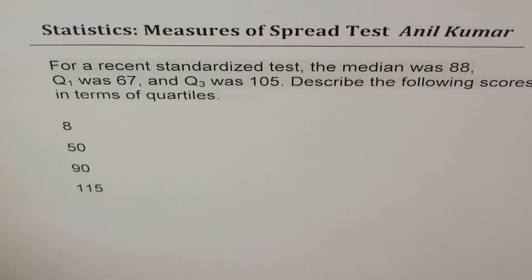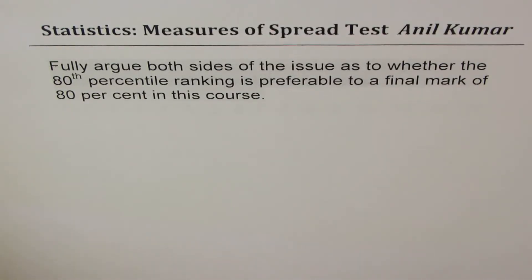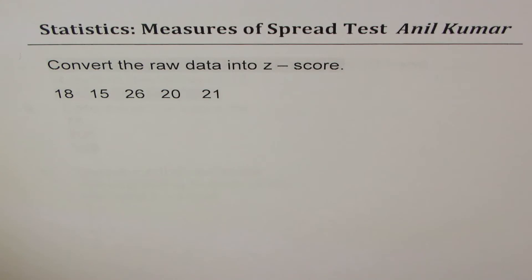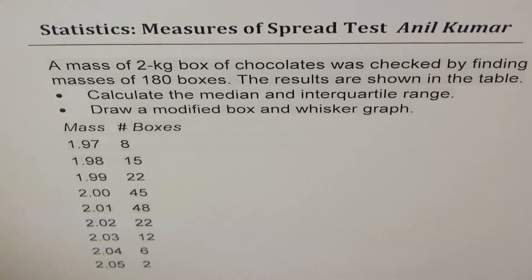Then we'll take up questions based on quartiles, just to understand their basic definition, and percentile ranking. We'll also make a box and whisker diagram or plot with this data, calculate z-scores from raw data, and relate scores with z-score. We'll take up a few examples based on measures of spread as shown here. You can always pause the video and copy the questions.